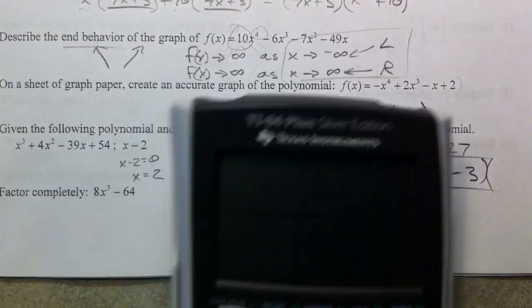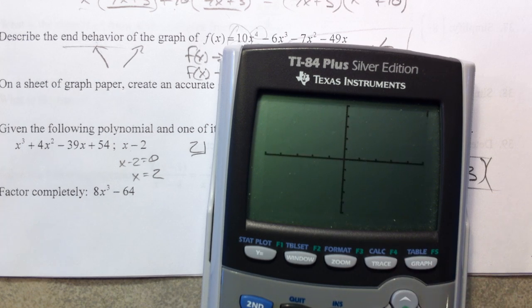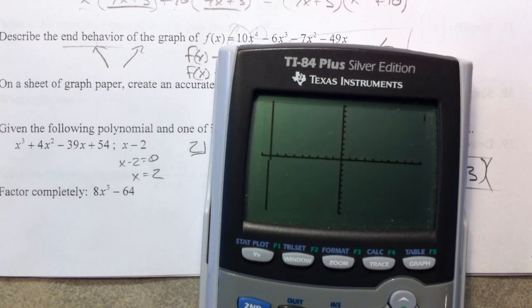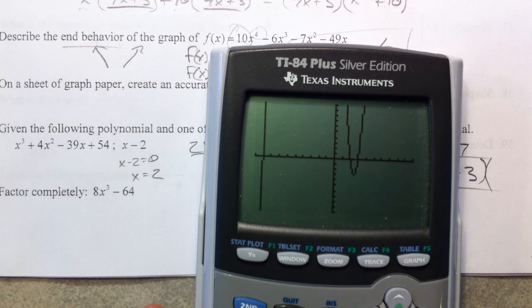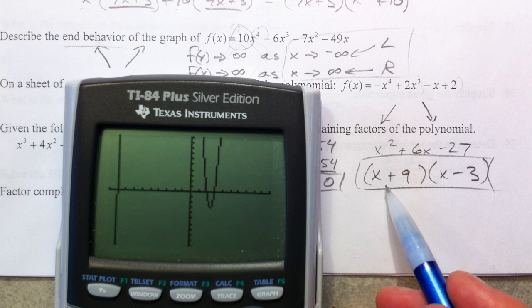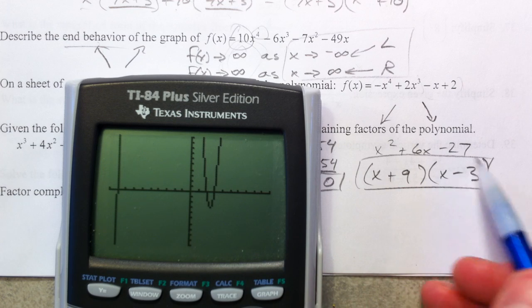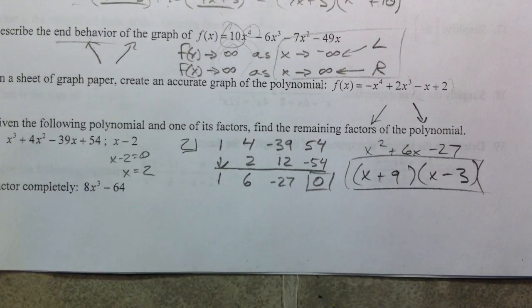If you wanted to, you could type this into your calculator. And see where it crosses the x axis. And so it's crossing at negative 9, crossing at positive 2, positive 3. And so negative 9 gives you x plus 9 as a factor. Positive 3, x minus 3 as a factor. And then the other one is our original one.